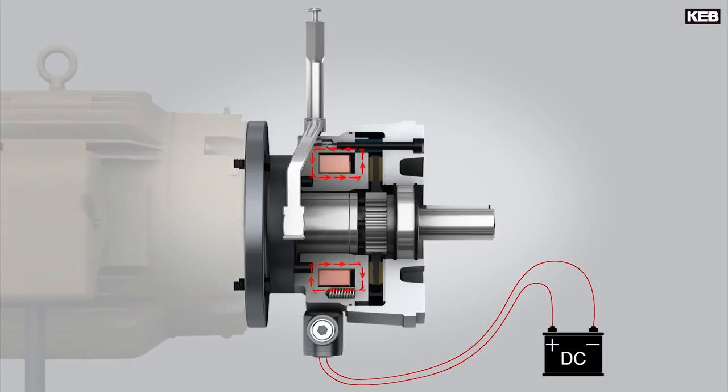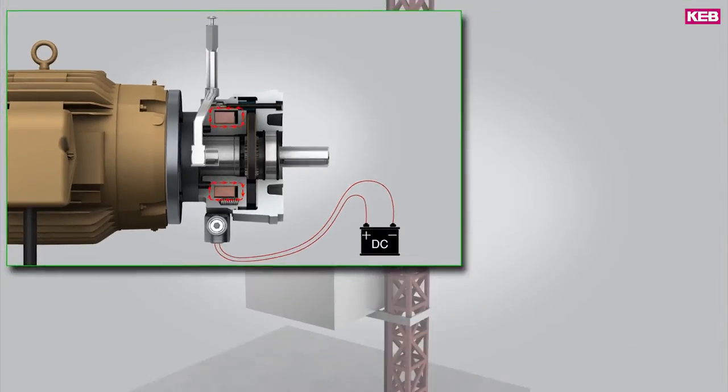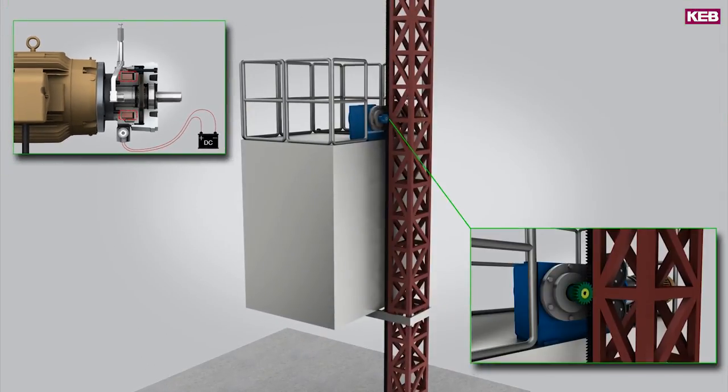With the armature pulled in flat against the magnet face, the torque from the motor input is transmitted through the brake to the output shaft and gearbox. With the brake powered and released, work is done on the elevator or machine.